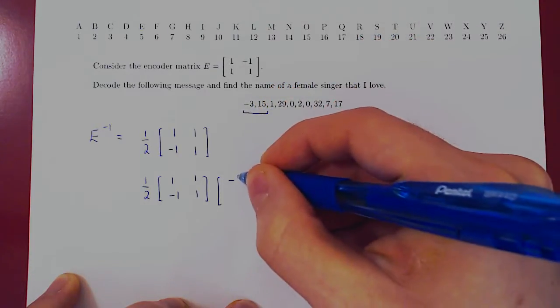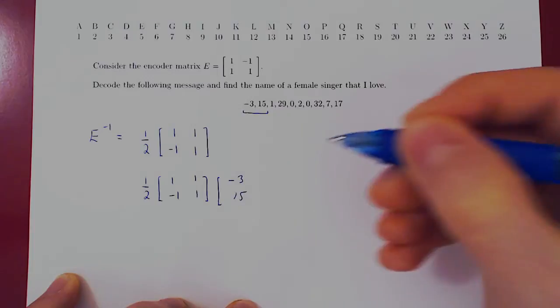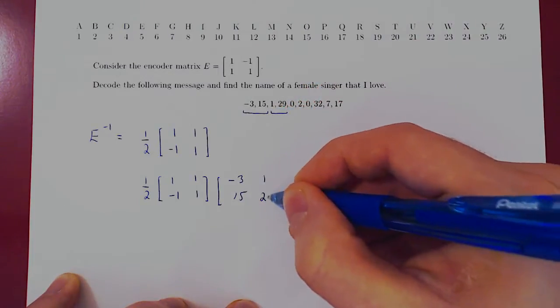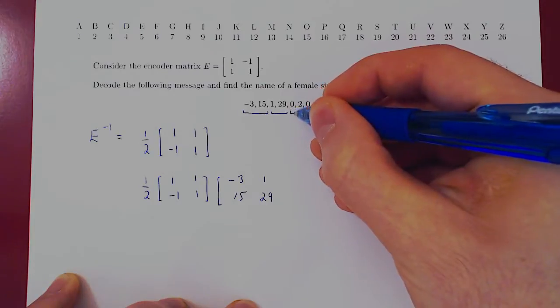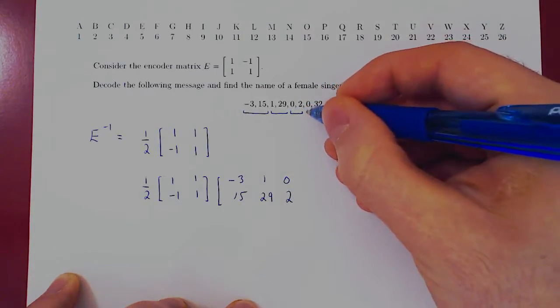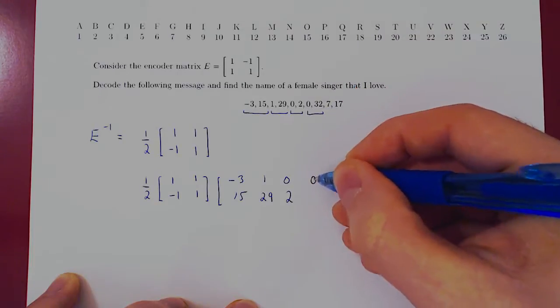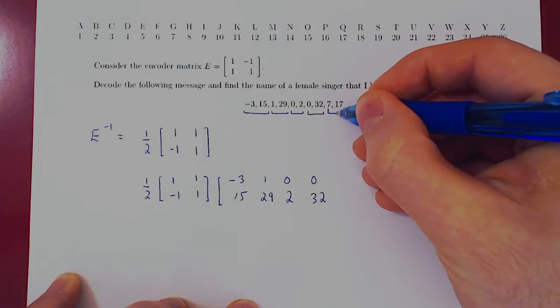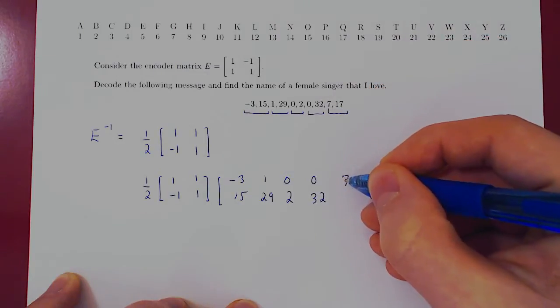Second column, 1, 29. Third column, 0, 2. Fourth column, 0, 32. For fifth column, 7 and 17.